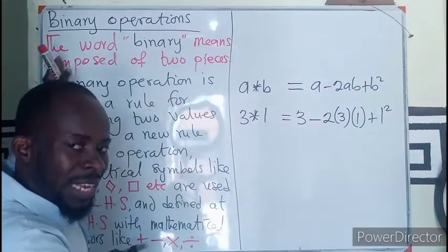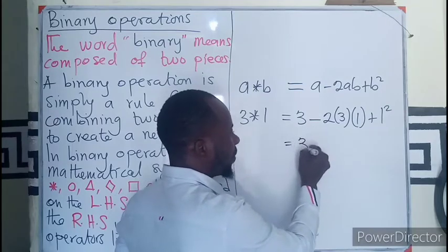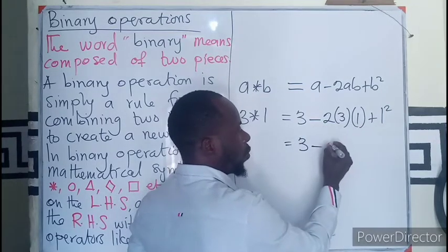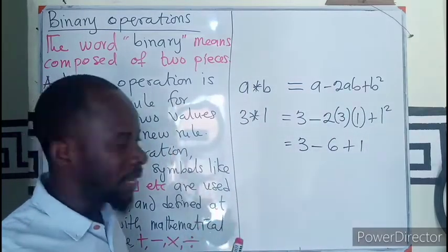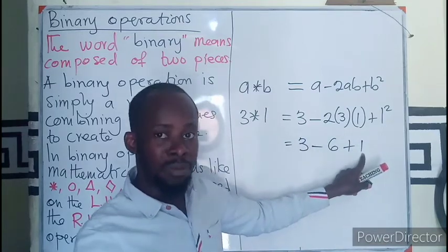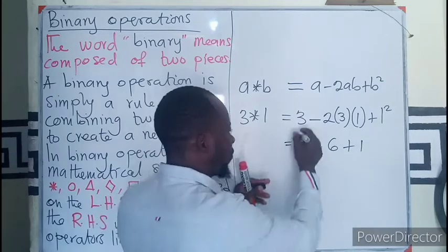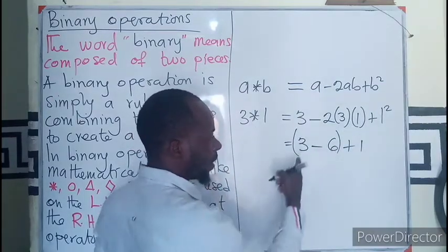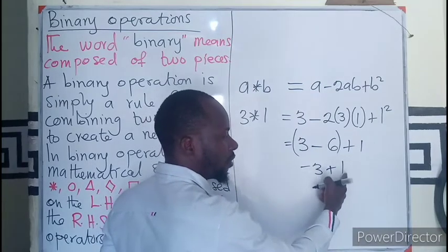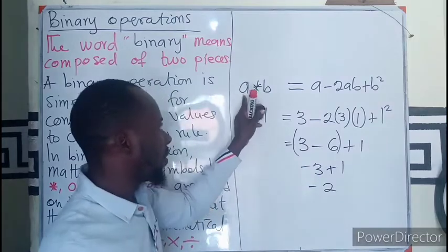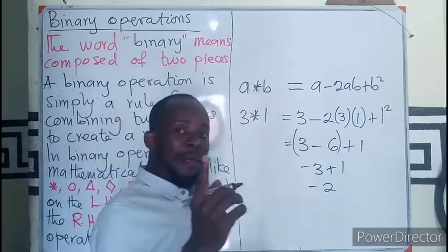Operating on these two terms we compute: 3 minus 2 times 3 times 1 plus 1 squared. That gives us 3 minus 6 plus 1. Using BODMAS, solving from left to right with addition and subtraction, 3 minus 6 gives negative 3, and negative 3 plus 1 gives negative 2. So 3★1 equals negative 2.